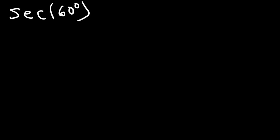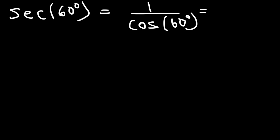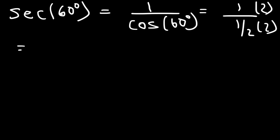Let's try another example: secant of 60 degrees. Secant is the reciprocal function of cosine, so secant 60 is 1 over cosine 60. Using the table or the 30-60-90 triangle, we know cosine 60 is 1 half. So 1 divided by 1 half: multiply top and bottom by 2, the halves cancel, and secant of 60 is 2.